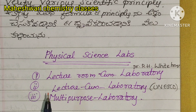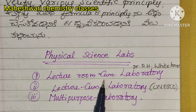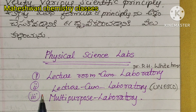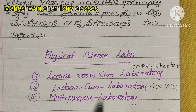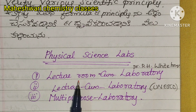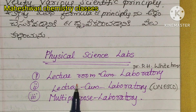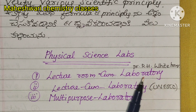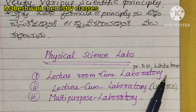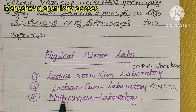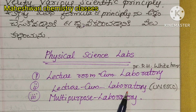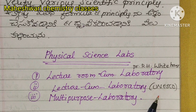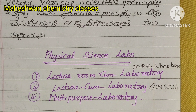Physical science labs. The three types are: first, lecture room come laboratory; second, lecture come laboratory; third, multipurpose laboratory. The lecture room come laboratory is called the Dr. R.H. Whitehouse type. The second type is lecture come laboratory, and the third type is multipurpose laboratory.